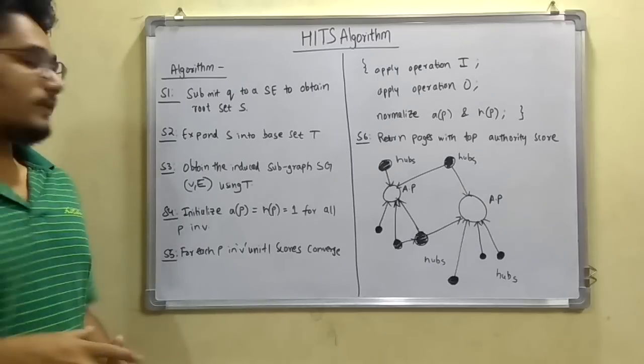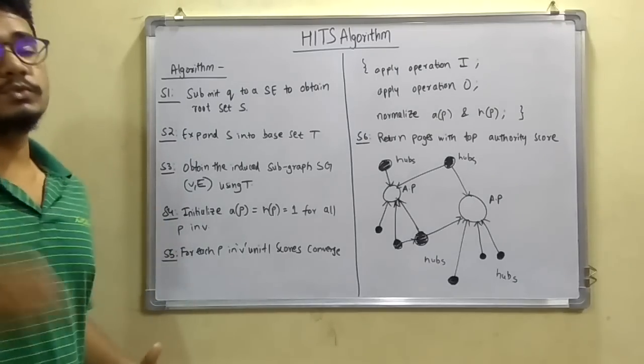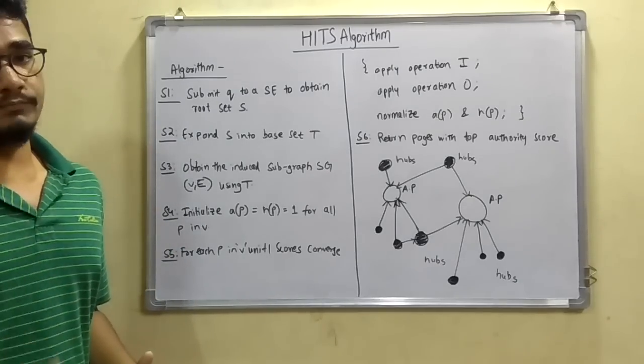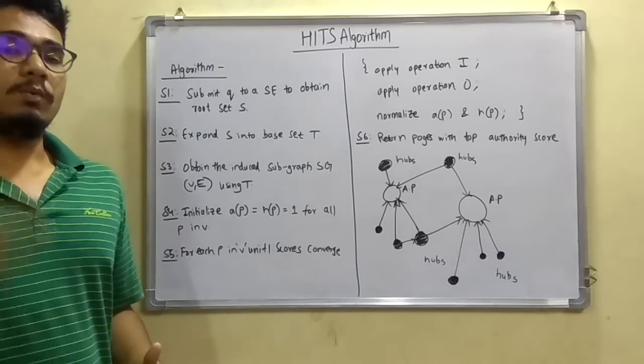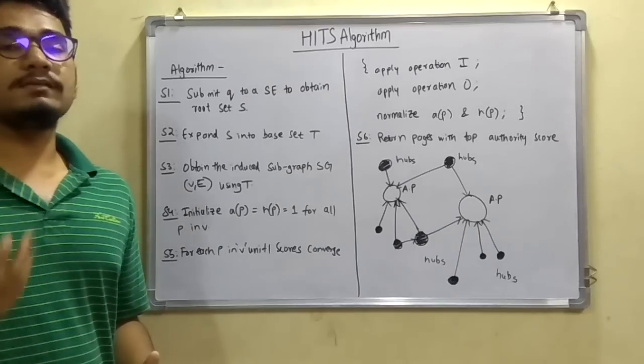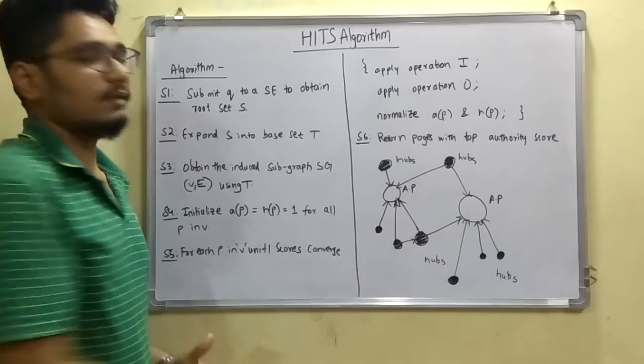Next, after we do this, we move on to step 3, that is to obtain the induced subgraph S(G,V,E). V is the vertex or vertices and E is the edges.